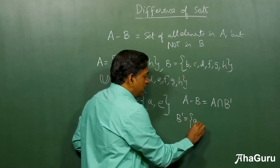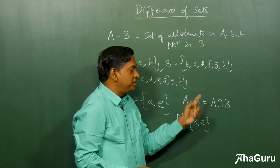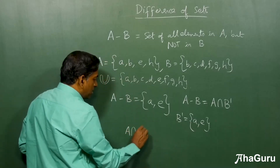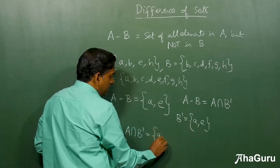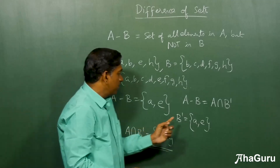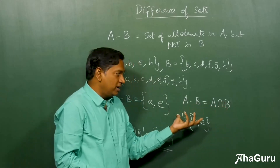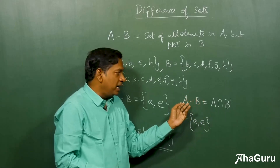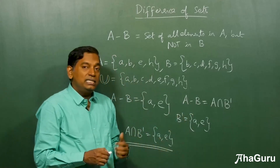The universal set is all letters a to h. B-bar contains the elements not in B, so a and e will be there, since b, c, d, f, g, h are in B. Now A intersection B-bar is {a, b, e, h} intersection {a, e}, which gives {a, e}. Therefore A minus B equals A intersection B-bar. This is not a rigorous proof — it's just an example — but we can also show it using a Venn diagram for a more general proof, where both regions will be exactly the same.